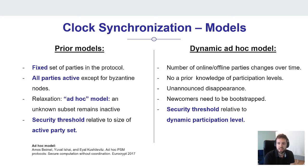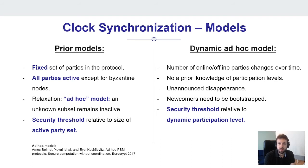In this work we consider the dynamic ad hoc model, where the number of online and offline parties changes over time. We have no a priori knowledge of the participation level, so no threshold and no counting of parties is reliable because participation can drop at any time — we have unannounced disappearance. Newcomers must be bootstrapped into the protocol, and the security threshold is formulated relative to the current participation level: for example, if the majority of parties always exceeds the number of dishonest parties no matter what the participation level, then we are secure. Prominent protocols in this model are Nakamoto consensus protocols in the PoS or PoW space.